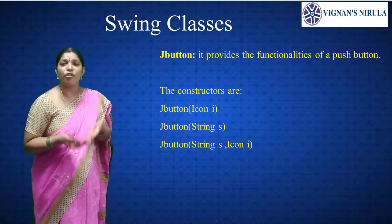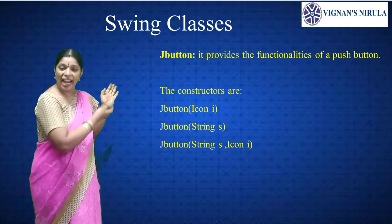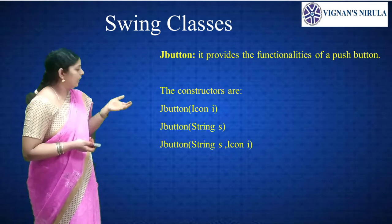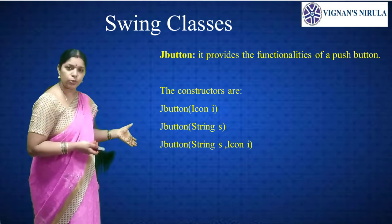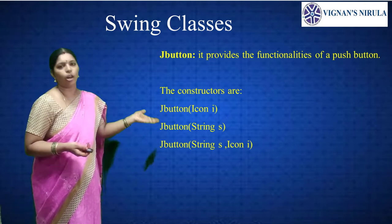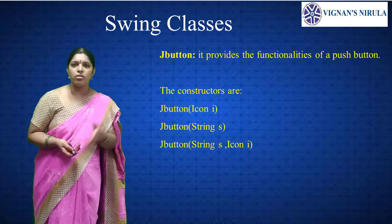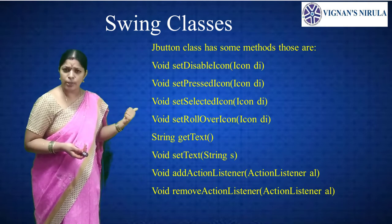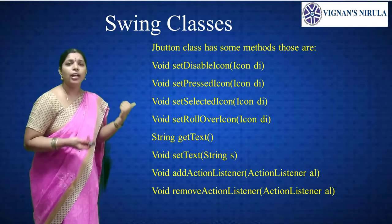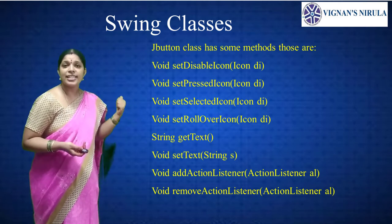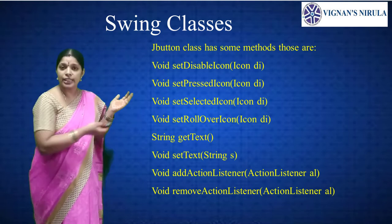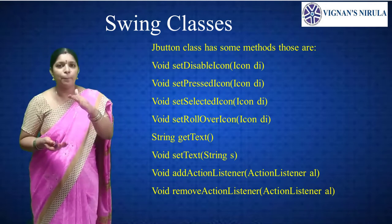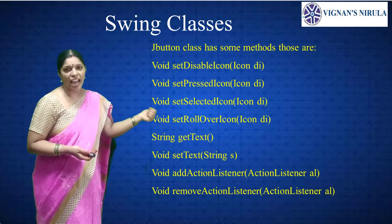JButton provides the functionality of a push button, allowing icons, strings, or both to be associated with push buttons. The constructors are: JButton(Icon i), JButton(String l), and JButton(String s, Icon i). JButton classes have methods including void setDisabledIcon() to disable an icon, and setRolloverIcon() which sets an icon displayed when the mouse rolls over the button.